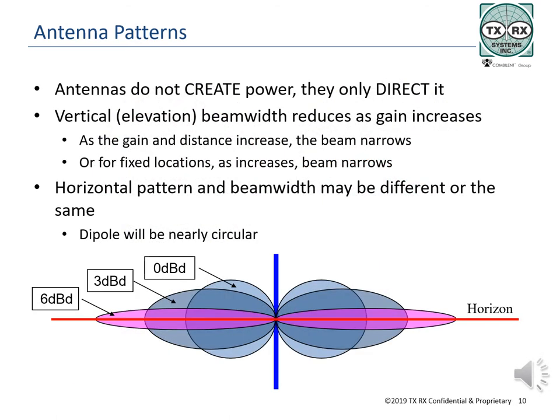By now, it is easy to see that one of the major themes of this section is a basic physics concept: neither energy nor matter can be created or destroyed — they can only be converted from one to the other. This holds true for our radiation patterns from any radiating source. We can direct the energy as needed, which results in a measured pattern showing where the energy is going. But we are not creating the energy, we are only directing it.